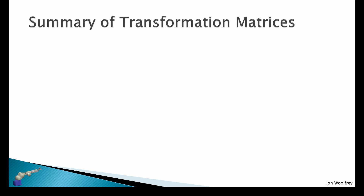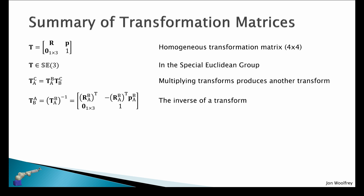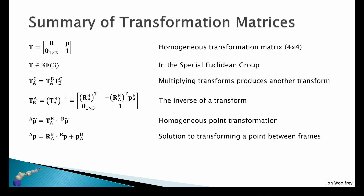To summarize transformation matrices: when we combine rotation and translation in this matrix format, this is a homogeneous transformation matrix, which is four by four, and is in the special Euclidean group. Multiplying transforms produces another transform, and the inverse of a transform has this specific format. To do a homogeneous point transformation, we must modify our point vectors by appending a 1. This is the solution to transforming between frames.